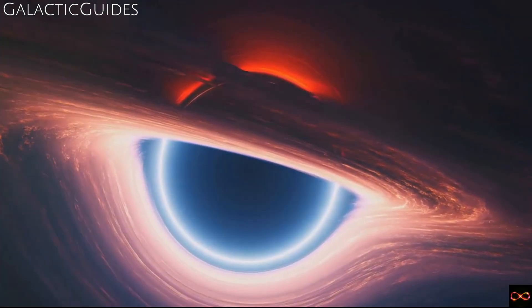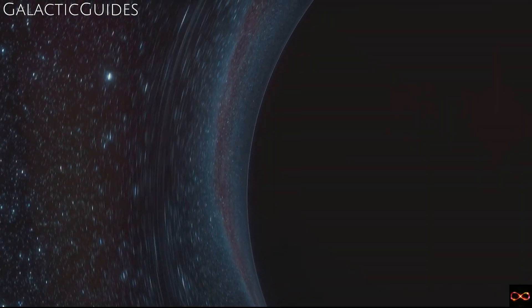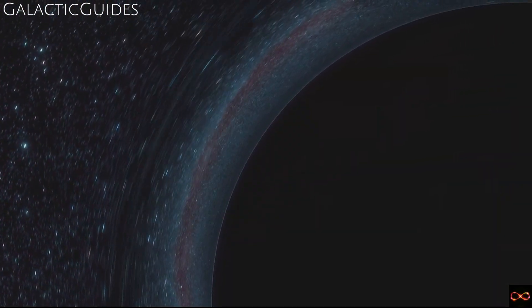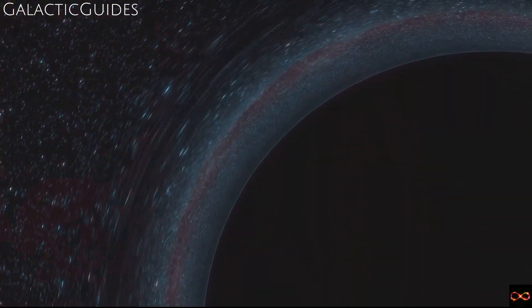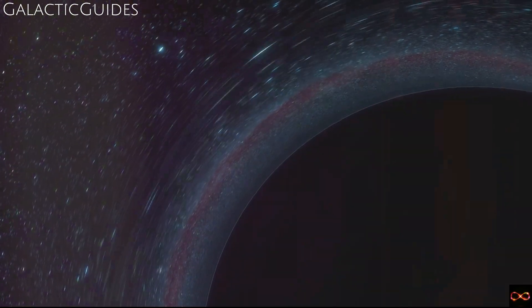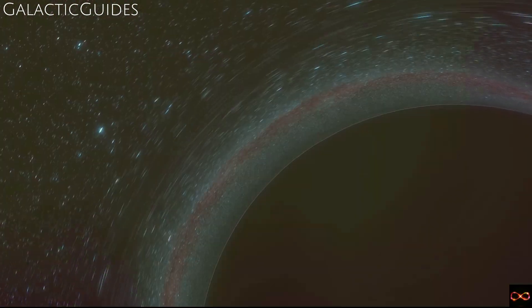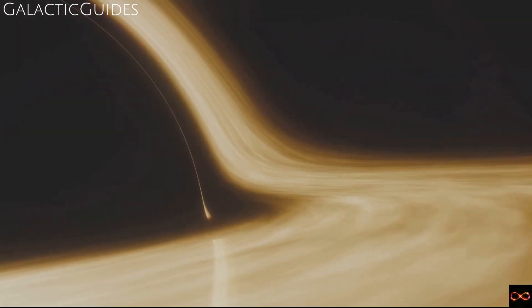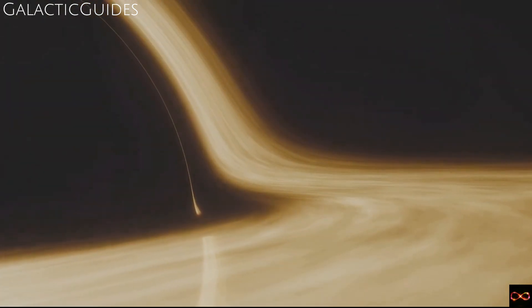First, let's talk about the event horizon. This is the boundary around a black hole beyond which nothing, not even light, can escape. Once something crosses the event horizon of a black hole, it's destined to be swallowed up. Now what happens once something crosses the event horizon and enters the black hole?